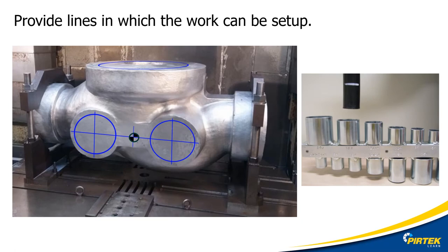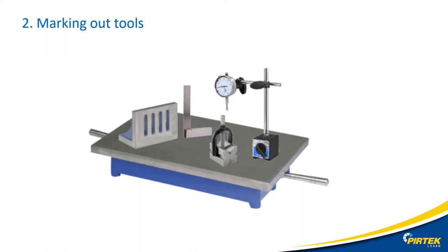Marking out is commonly utilized for setting up. In this example, we have a large aluminium pump housing that needs to be set up on the machine bed. The alignment marks assist the machinist in setting up the job in the machine. When we mark a hose length, we're basically utilizing assembly marks or marking out for assembly. Now let's have a look at some of the most common tools used for the marking out or marking off procedure.